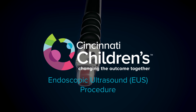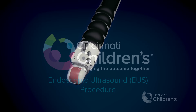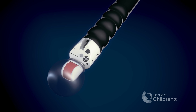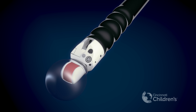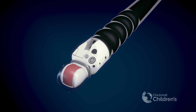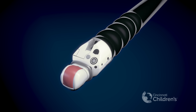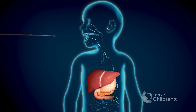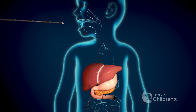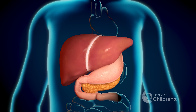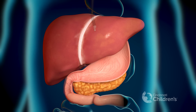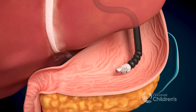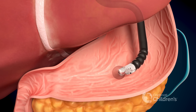Endoscopic ultrasound is an endoscopy procedure using a special endoscope with ultrasound capability. It is used for the purpose of evaluating internal organs of the chest and abdomen along with the lining of the gastrointestinal tract. It can be used in children weighing more than 15 kilograms. The flexible echo endoscope is passed through the mouth into the stomach and small intestine. It can be used for diagnostic purposes to visualize adjacent organs, lymph nodes and blood vessels.